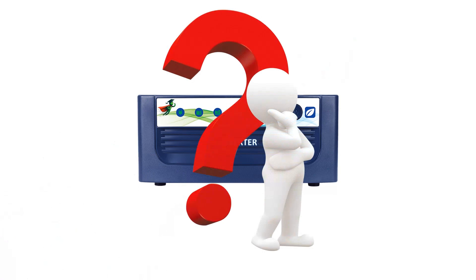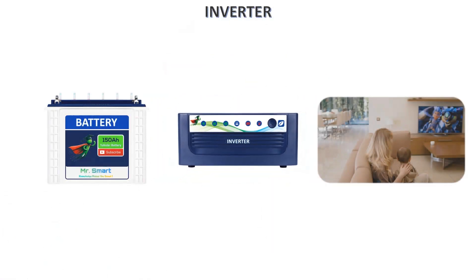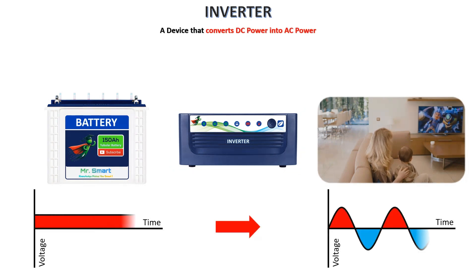First things first, what exactly is an inverter? An inverter is a device that takes direct current or DC power, the kind you get from a battery, and converts it into alternating current or AC power, which is what most of your home appliances use. Think of it as a translator between two different types of electricity.